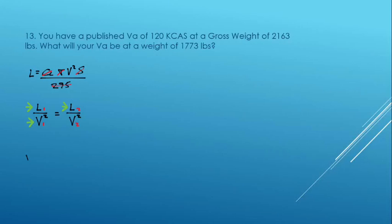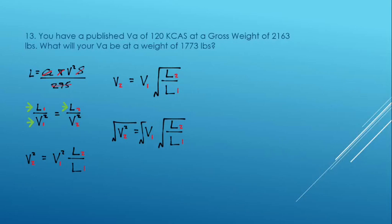And so we're going to solve that for the second velocity. Simplify the formula. And we wind up with the new weight divided by the old weight times the old velocity. Plug in the values, the known values. And we wind up with the new VA at the lighter weight of 109 knots. So this is a very important manipulation of the lift formula to figure new VA's for new weights.